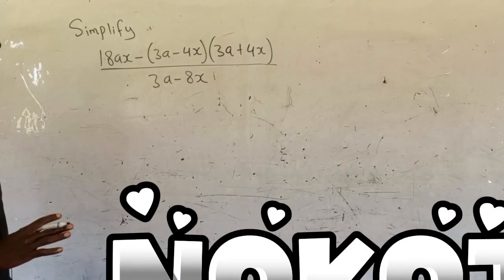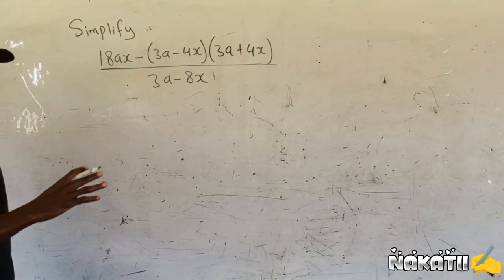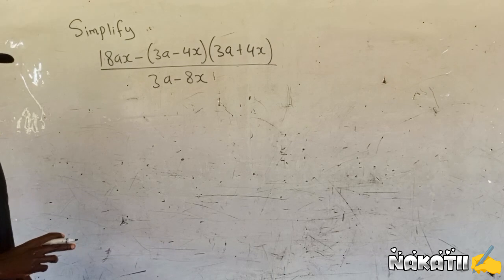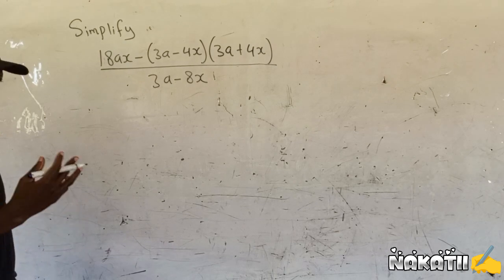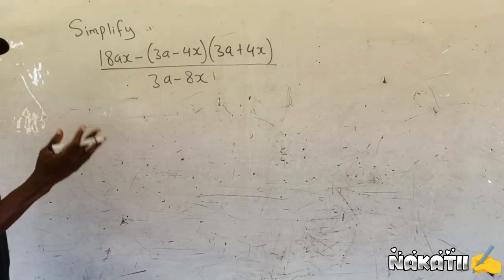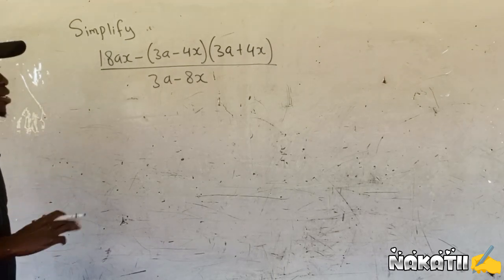We have been told to simplify. Now we just need to factorize the numerator, then we check what is common between the numerator and the denominator, and then we cancel.